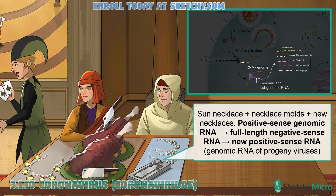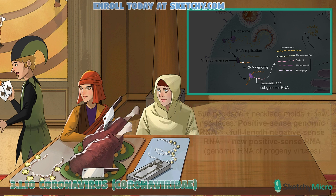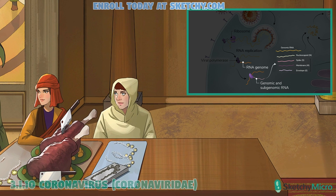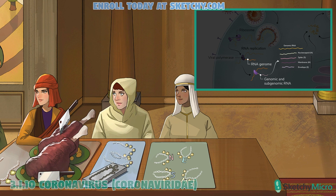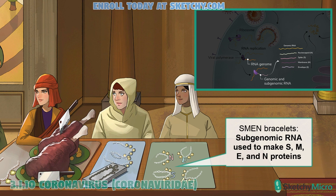Just like the virus, this wise woman is using positive sense necklaces to make negative sense molds, which she can then use to make more positive sense necklaces. The full positive sense genomic RNA is also used to produce shorter RNA segments that ultimately lead to synthesis of viral proteins — which is how the S, M, E, and N proteins we talked about at the beginning ultimately get made.